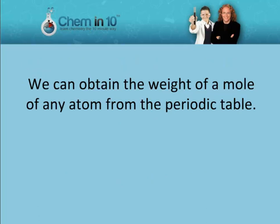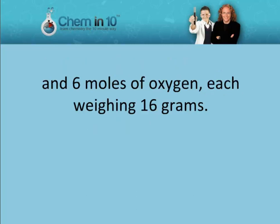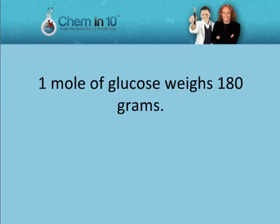We can obtain the weight of a mole of any atom from the periodic table. Glucose, C6H12O6, consists of 6 moles of carbon, each weighing 12 grams, 12 moles of hydrogen, each weighing 1 gram, and 6 moles of oxygen, each weighing 16 grams. Therefore, one mole of glucose weighs 180 grams.